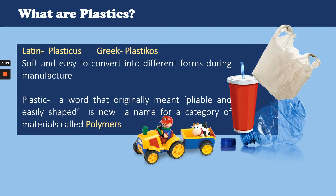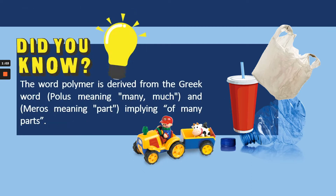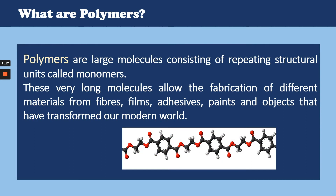Plastic is a word that originally meant pliable and easily shaped, derived from the Latin word plasticus or the Greek word plasticos. The word polymer is derived from the Greek word polis meaning many and meros meaning parts, implying something made up of many parts — because polymers are large molecules consisting of repeating structural units called monomers. These very long molecules allow the fabrication of different materials from fibers, films, paints and objects that have transformed our modern world. It is the sheer size of the molecule that gives plastics their well-known properties of strength, toughness and flexibility.